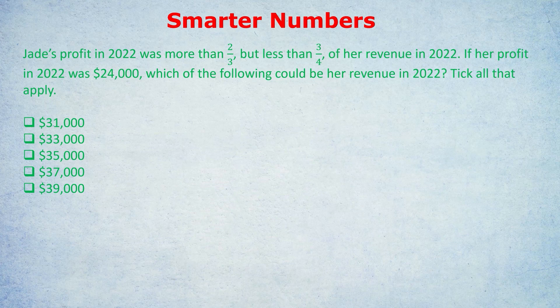Even though it said her profit was more than two-thirds, we're going to pretend it equals two-thirds of her revenue. And when it said her profit was less than three-quarters of her revenue, we are going to pretend that it was equal to three-quarters of her revenue, even though that's not allowed. I know it's kind of breaking the rules, but this is the kind of fun we can have on the GRE and the GMAT.